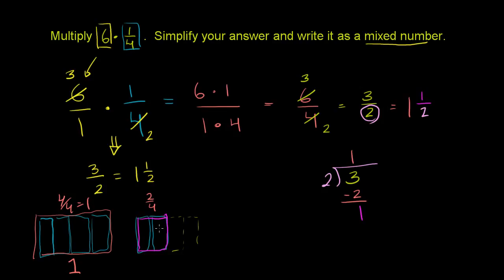2 out of 4 is the same thing as 1 over 2. So this right here is 1 out of a possible 1 and then 2. So this is 1 and 1/2. Which is exactly what we got before.